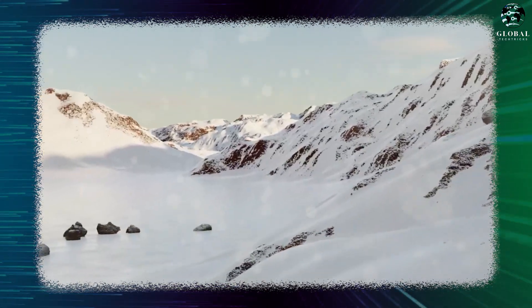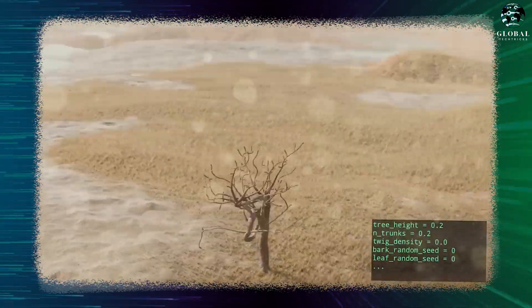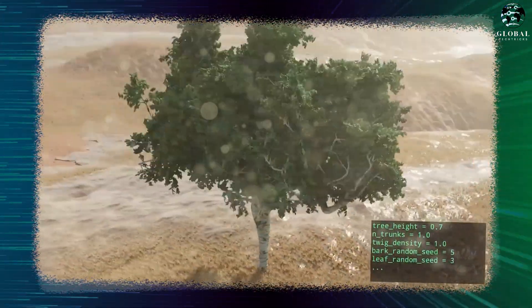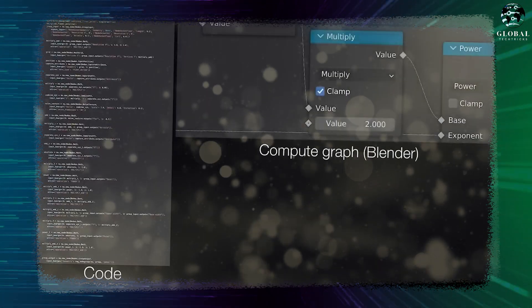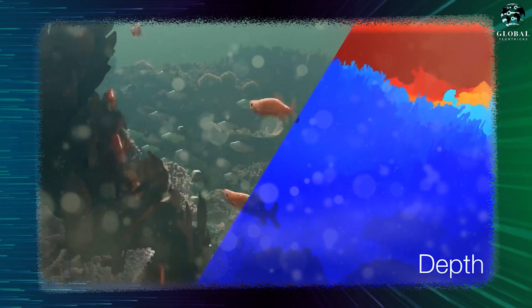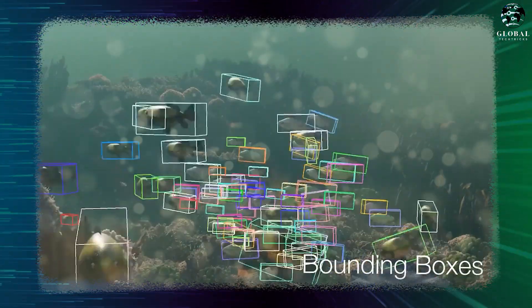One of the most remarkable aspects of InfiniGen is the inclusion of ground-truth automatic annotations. These annotations provide valuable information for computer vision tasks, including optical flow, 3D scene flow, depth estimation, surface normals, panoptic segmentation, and occlusion boundaries.